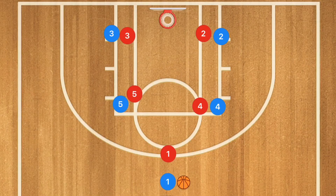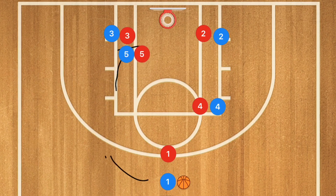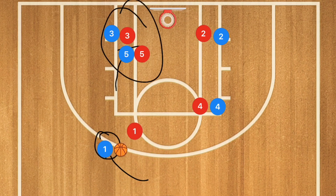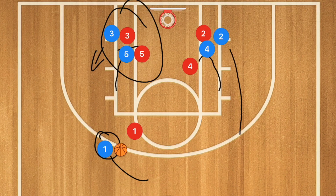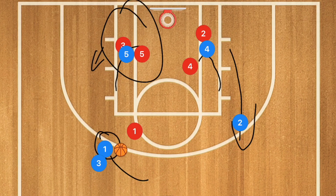In this first basketball play, player 5 is going to set a screen down for player 3. Player 1 is going to dribble over towards the left side. After this screen is set and player 3 starts running off of that screen, we're going to have player 4 set a screen down for player 2. This is very similar to the pin down box basketball play. Player 2 is going to be popping up and player 3 is going to be doing the same.